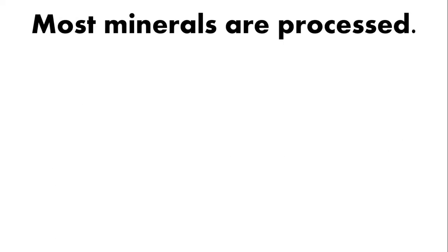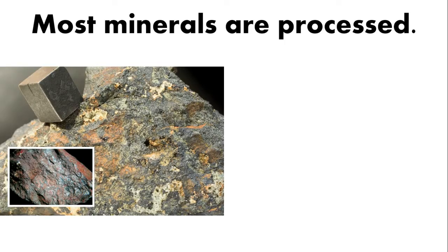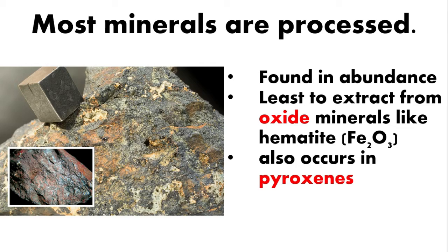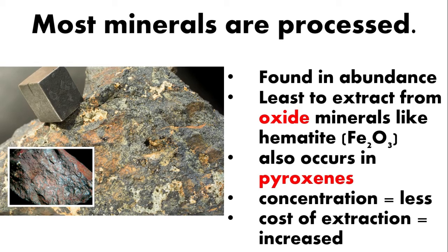So most minerals are processed. For example, iron. Iron is found in abundance in minerals, but the process of extracting iron from different minerals varies in cost depending on the mineral. It is least costly to extract from oxide minerals like hematite. Although iron occurs in other substances like pyroxene, the concentration there is less and the cost of extraction is increased because strong bonds between iron, silicon, and oxygen must be broken, so they need more energy.